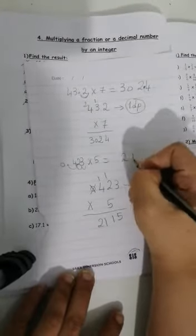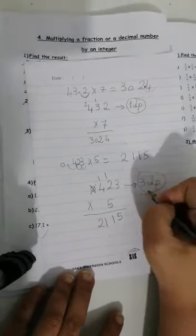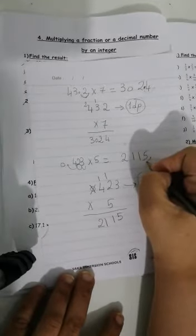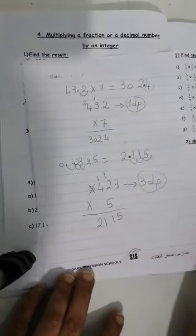Now my answer. Take it here. 2, 1, 1, 5. How many decimal places? 3 decimal places. So I will go from here and then start counting. 1, 2, 3. My decimal point is here.